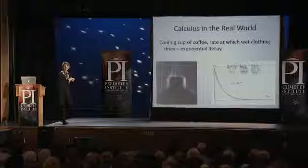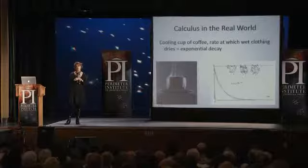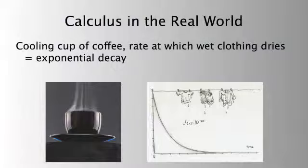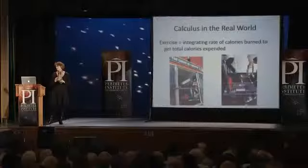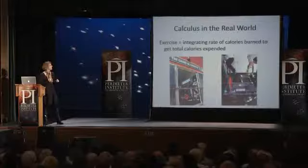Calculus in the real world again. Cooling cup of coffee — we got drenched at Space Mountain, and we ended up doing a mini calculus problem while waiting for our clothes to dry. That slow drip, drip, drip does follow an exponential decay curve. Exercise: you don't think about this because the machines do it for us, but when you're in the gym trying to burn calories on the Stairmaster, your exercise machine is essentially integrating the rate of calories burned to get the total calories expended. It needs to know your height, weight, and age — the more variables, the more accurate the reading. Conceptually, what's being done is calculus.